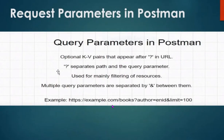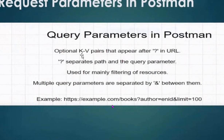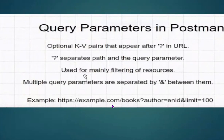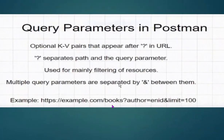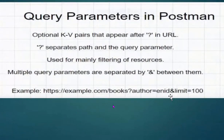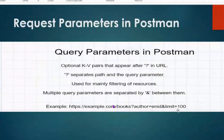Request parameters are key-value pairs that appear after a question mark in the URL. The question mark separates the path and the query parameter. Multiple query parameters are separated by an ampersand (&) between them. For example, in the query string, 'author' is a key and its value comes after the equals sign. 'Limit' is another key with '100' as its value. An ampersand is used to separate two query parameters.